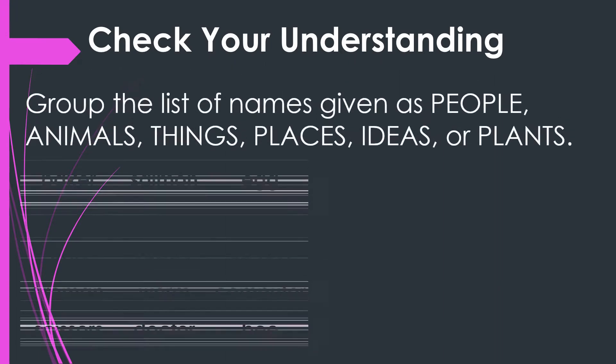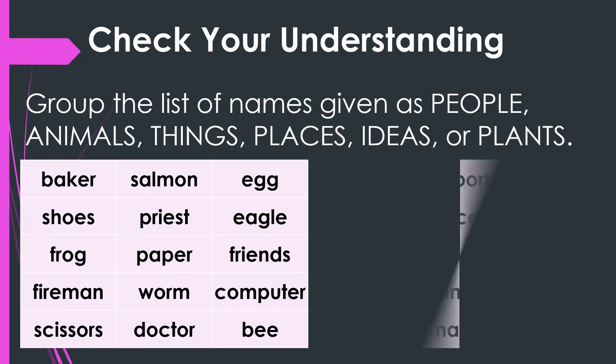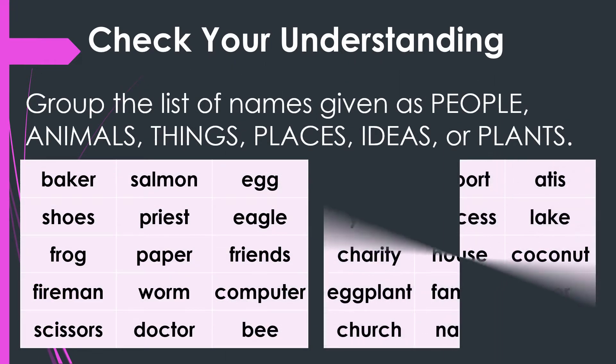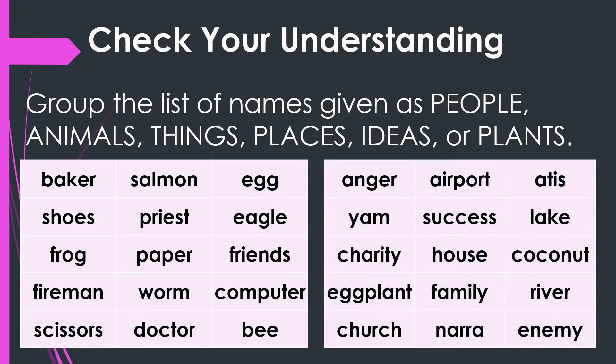Now let us check your understanding. From your handouts, you need to group the list of names given as people, animals, and things. And for the second group, as places, ideas, or plants.